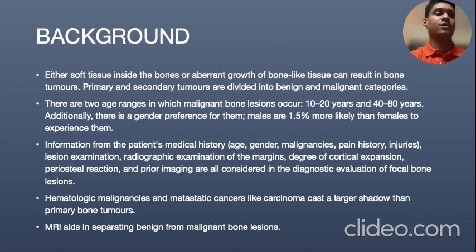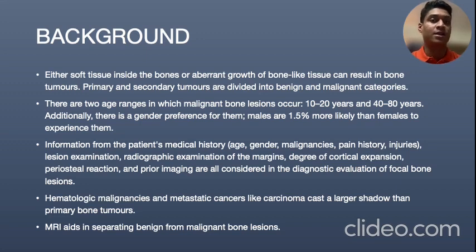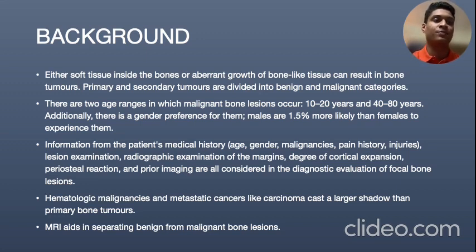Coming to the background, either soft tissue inside the bones or aberrant growth of bone-like tissue can result in bone tumors. Primary and secondary tumors are divided into benign and malignant categories. There are two age ranges in which malignant bone lesions can occur: 10-20 years of age and 40-80 years of age. Additionally, there is a gender preference, with males more likely than females to experience them by about 1.5%.